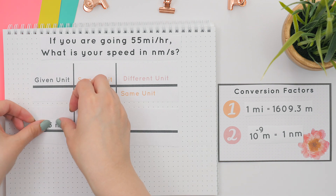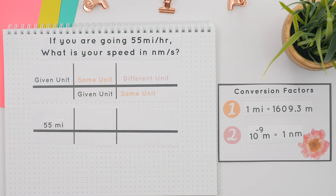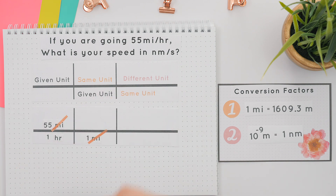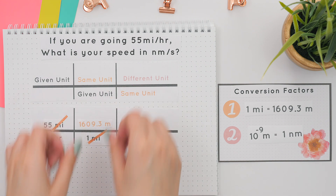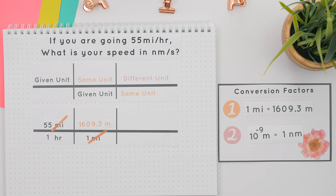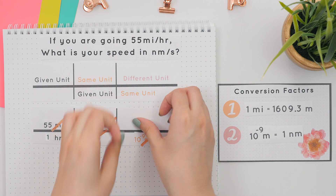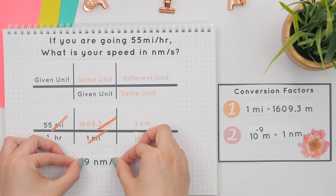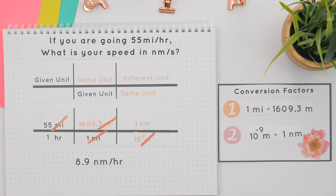Here's our proper setup. Start with the given unit of 55 miles on top and hours on the bottom. Align the given units of miles across so they can cancel, and on top we'll put meters — that was our first conversion factor. Next, align the same unit of meters across so they cancel, to get our different unit of nanometers. This was our second conversion factor. Now multiply straight across and divide, and we get this value with nanometers divided by hours as our units.